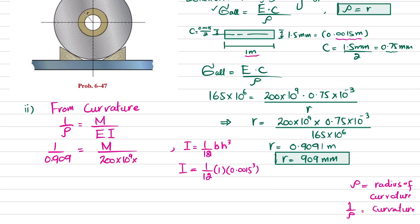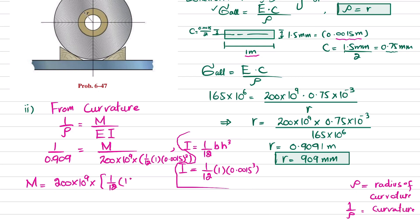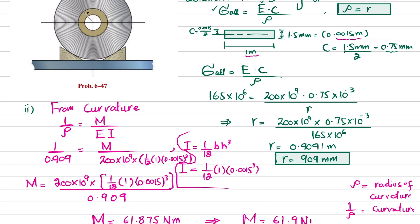So I = (1/12) × 1 × (0.0015)³. Substituting into the moment equation: M = E × I × (1/ρ) = (200 × 10⁹) × (1/12) × 1 × (0.0015)³ / 0.909. Solving this gives M = 61.875 newton·meter, or approximately M = 61.9 N·m.